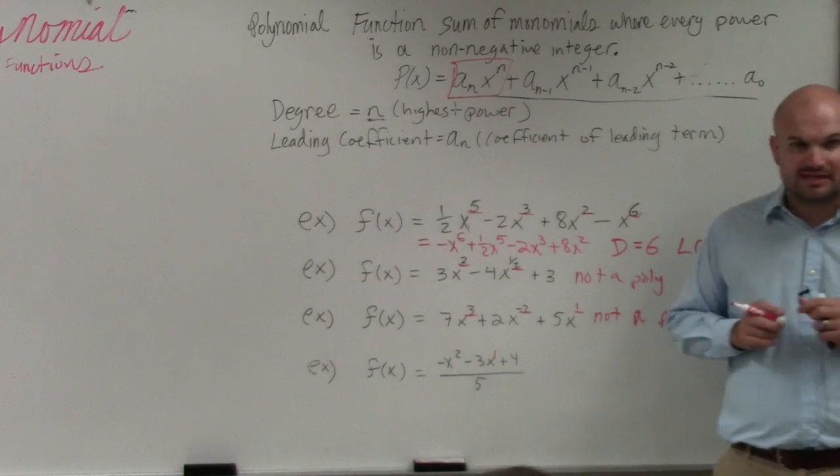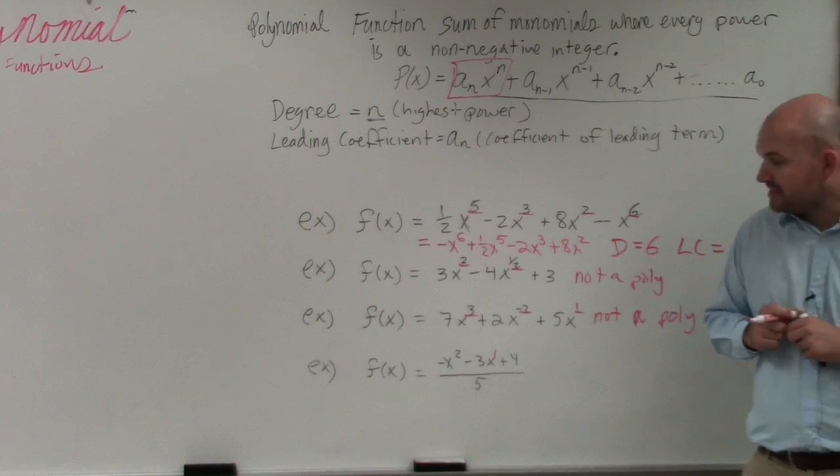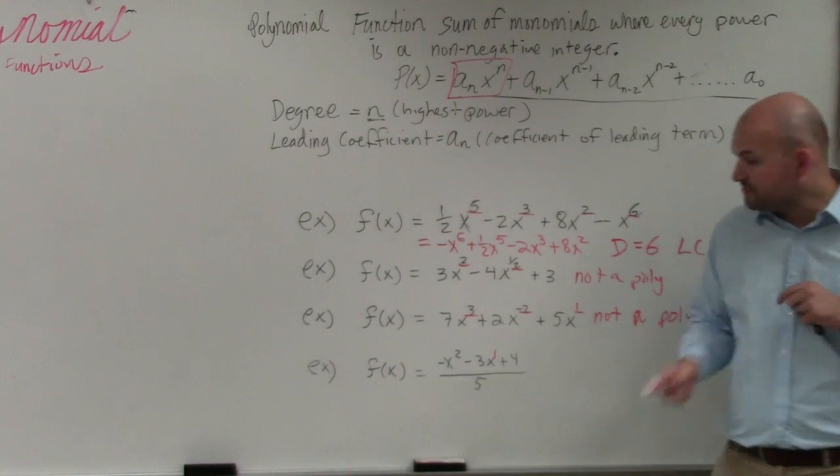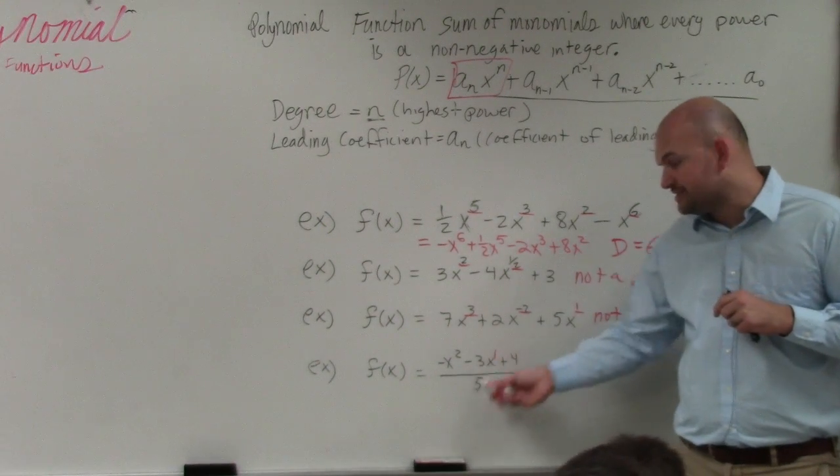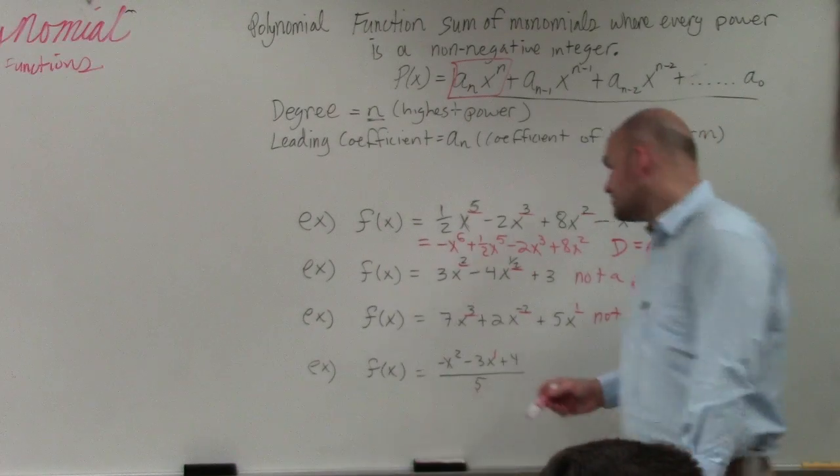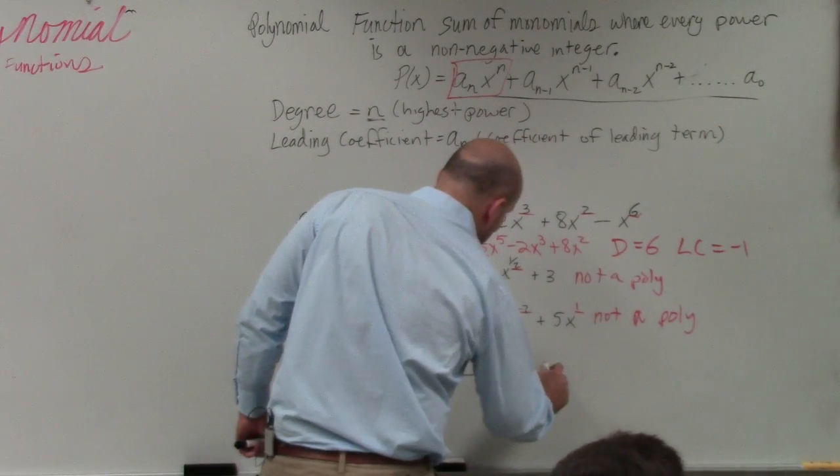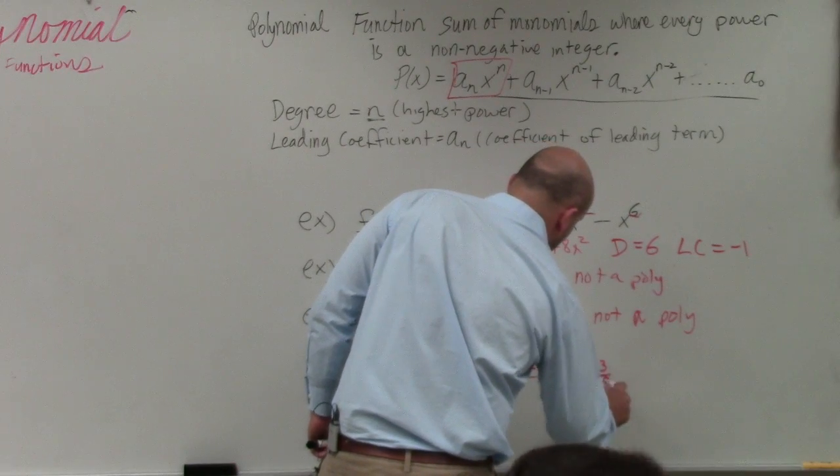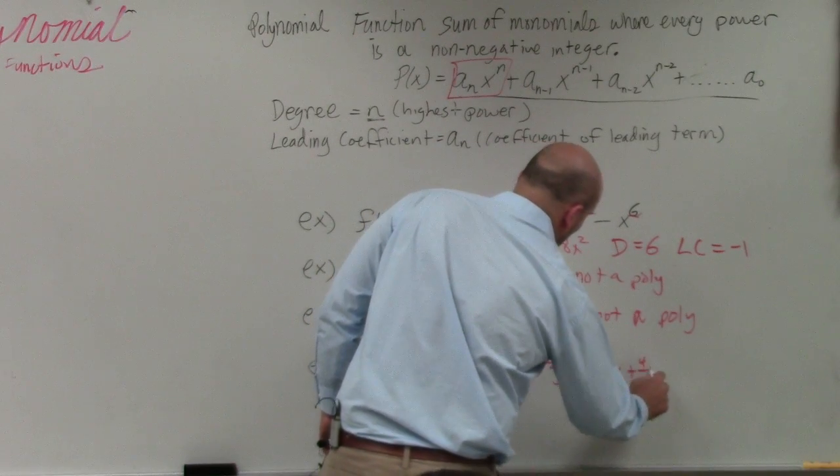However, if I was going to ask you what the degree is, a lot of you would say two, which is correct. But then if I asked for what the leading coefficient is, you'd say negative one, which is incorrect. The reason being, five is divided into all of these. So, if you rewrite this, it'd be negative one-fifth x squared minus three-fifths x plus four-fifths.